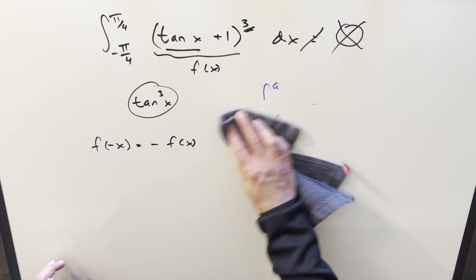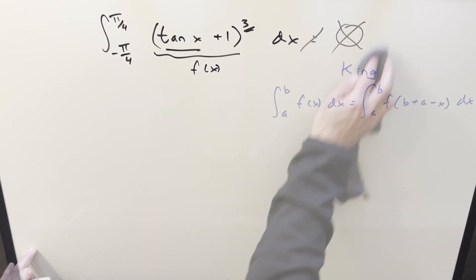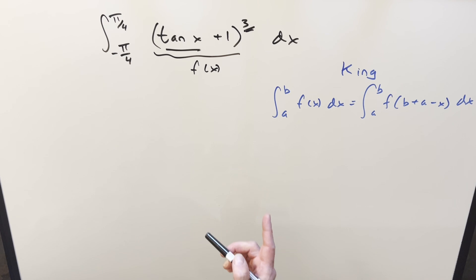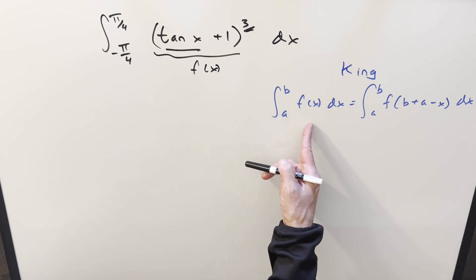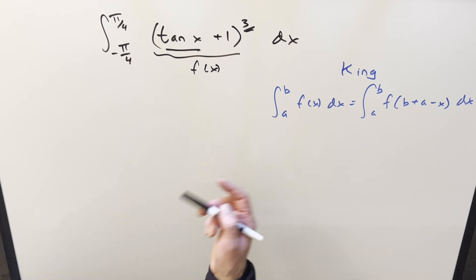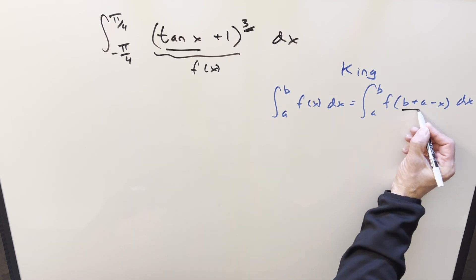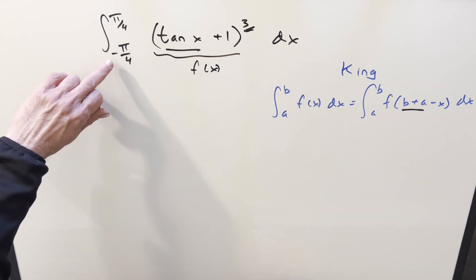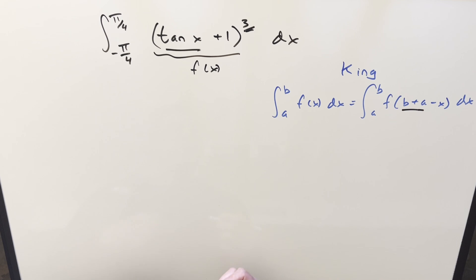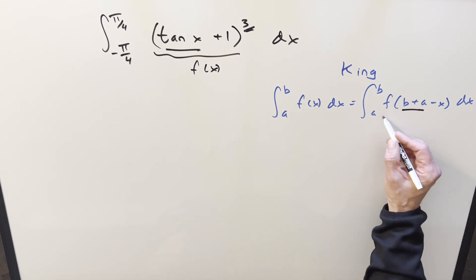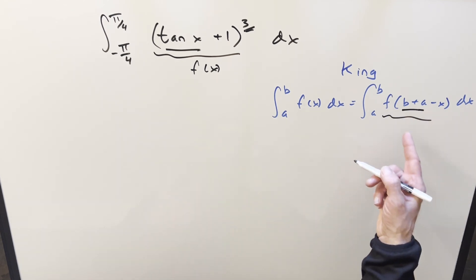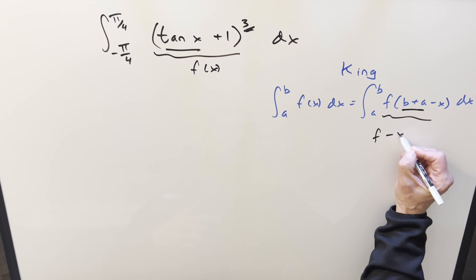So it turns out we need to scrap that and look at doing it a different way. What I want to do instead is use King's principle. We have this over here to the right. The nice thing about King's principle in this case, when you add the bounds up, see we're inputting b plus a minus x, the bounds, but when you add the bounds together it's 0.